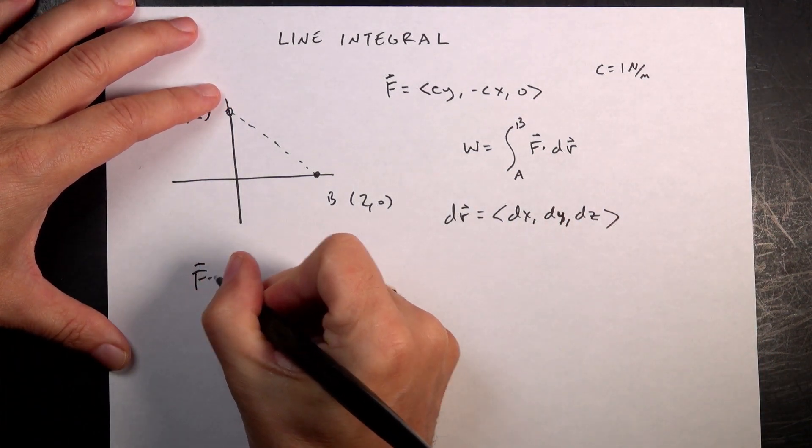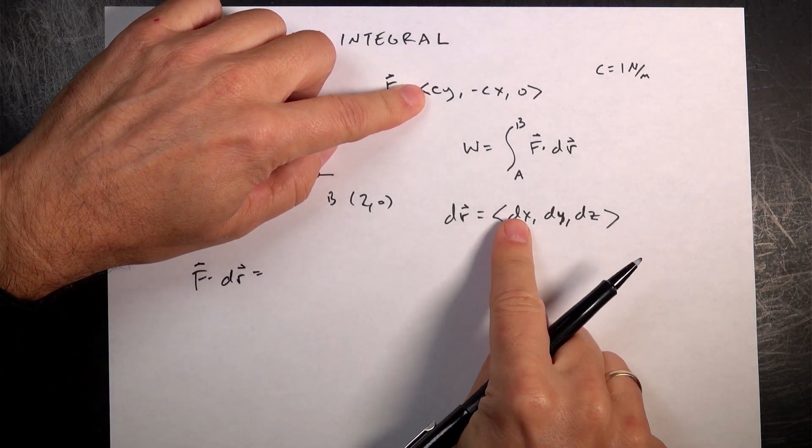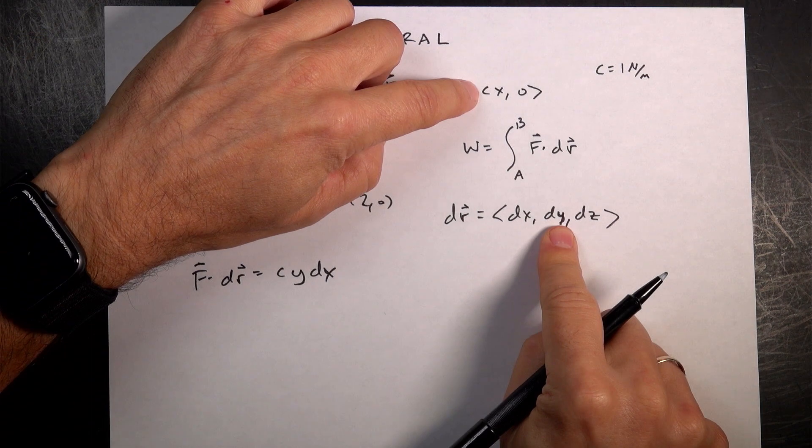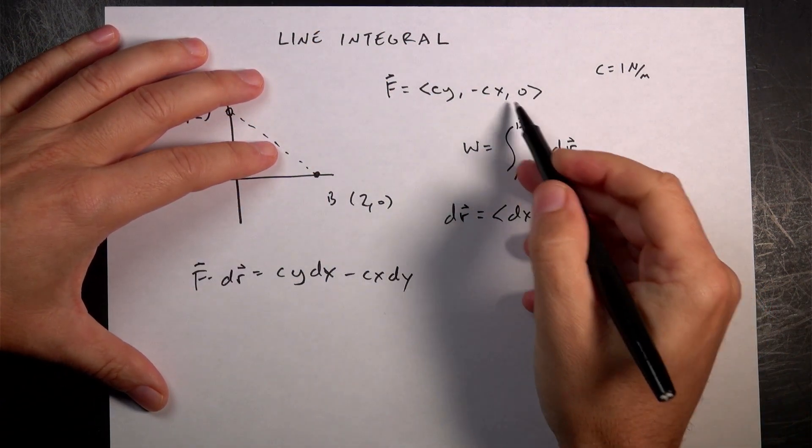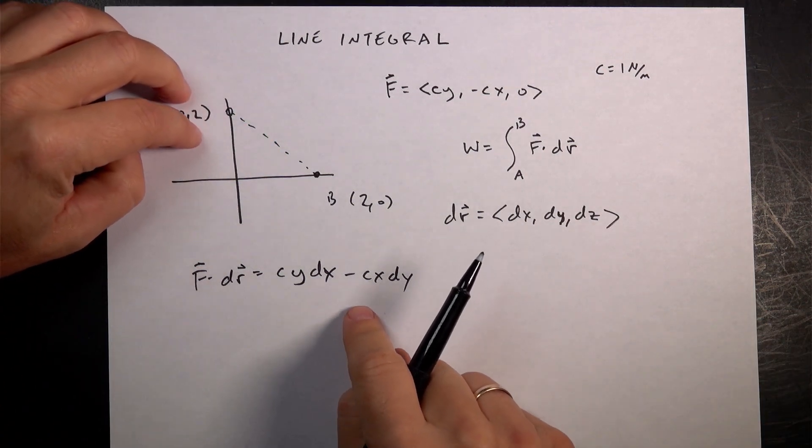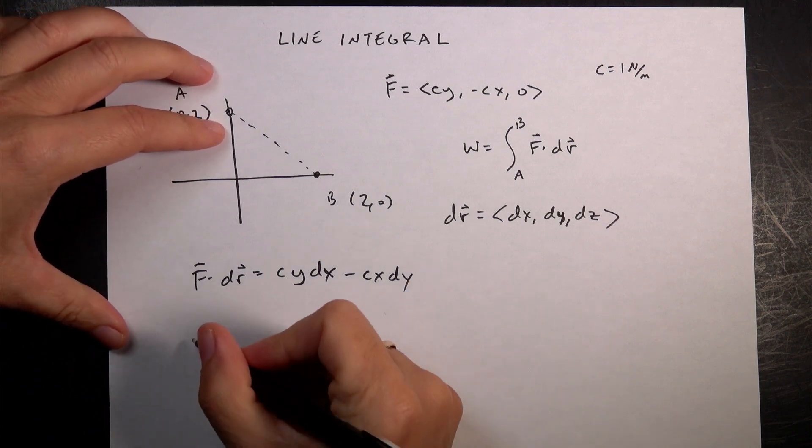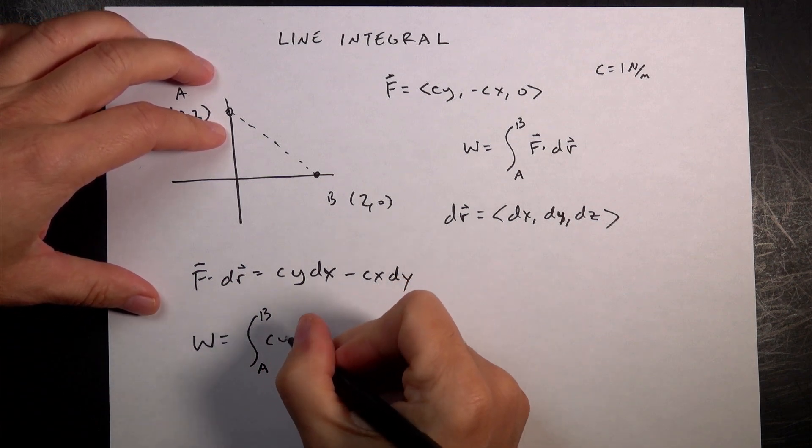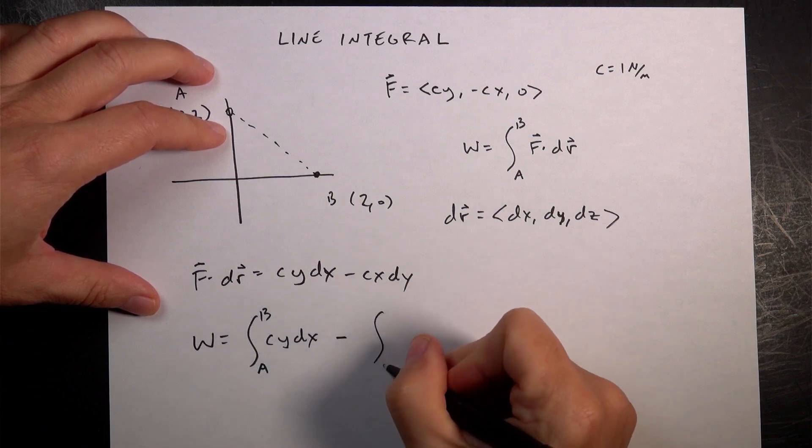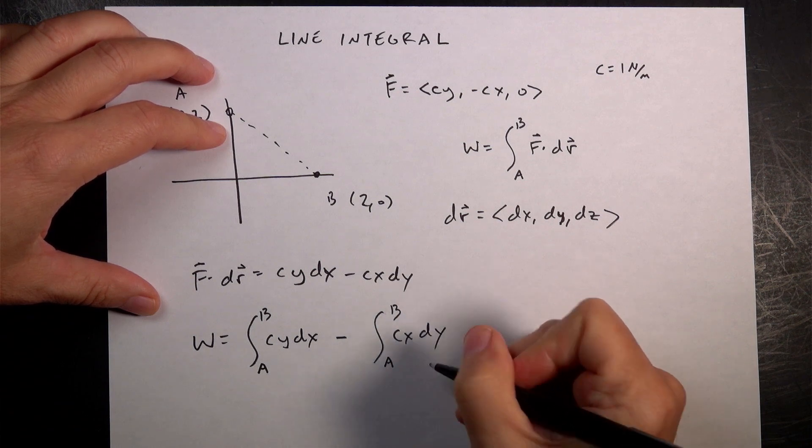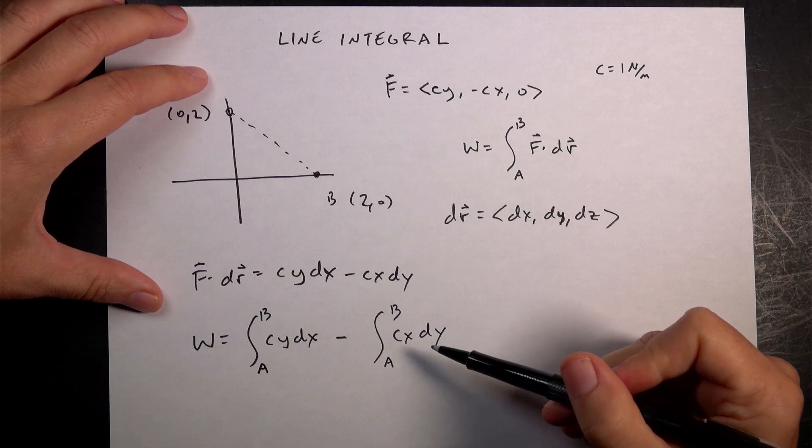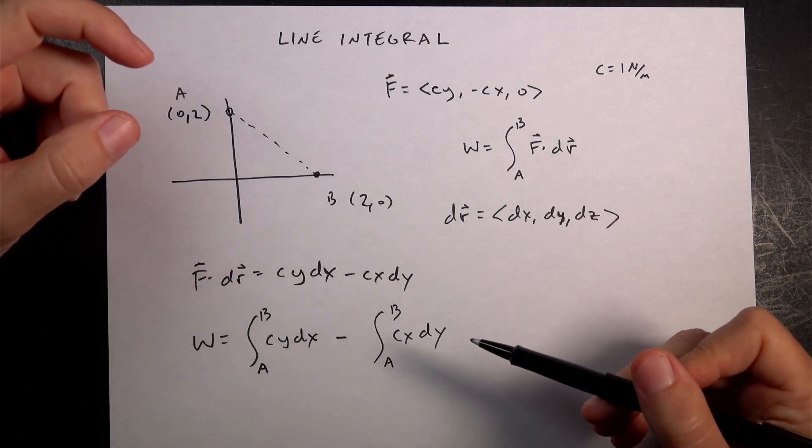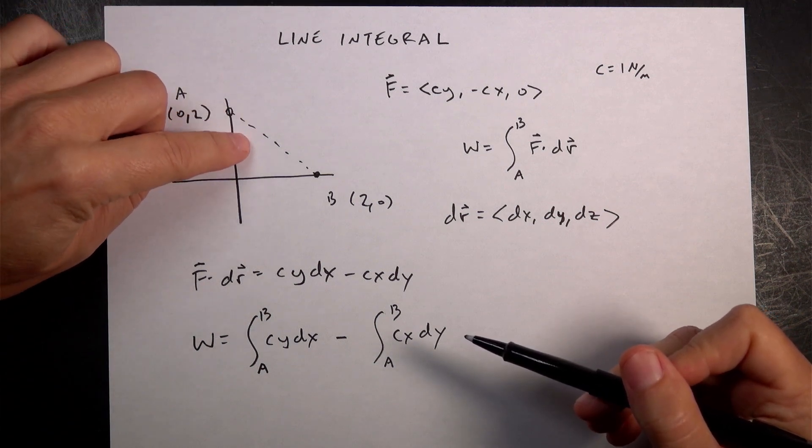Let's do F dot dR because we're going to integrate that. If I do the dot product between these two, I get cy times dx, cy dx, negative cx dy, and then zero. That's a scalar value and I can actually integrate a scalar thing. Now let's put this in our line integral: work is the integral A to B of cy dx minus the integral A to B cx dy. We have a problem here. This is an integral over x because I have a dx element there, and this is an integral over dy, but I have a y there and I have an x there. So I need to do some switcheroos here.